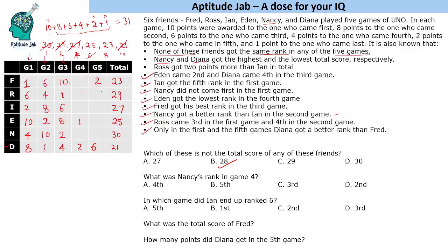Subtracting known points gives us the remaining values. For one player: they have 16 points so far and need 11 more, which must be 1 and 10. For another: they have 11 so far and need 18 more — that's 8 and 10. Checking each column confirms values 1, 2, 4, 6, 8, 10 appear correctly in each game column. The entire grid is now completely filled with all total scores verified.